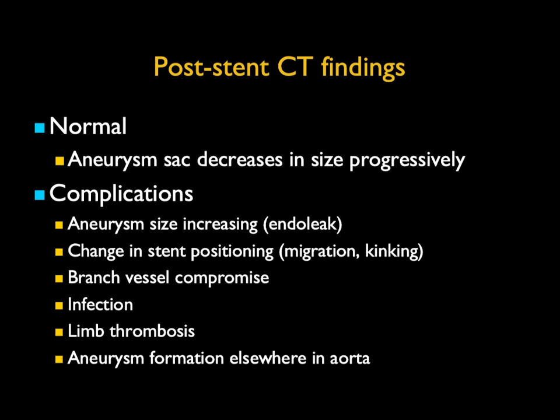If the positioning of the stent changes — migration or kinking — you have a problem. Branch vessel compromise, most commonly the renal artery, is also a concern, as are infections, limb thrombosis, and aneurysm formation elsewhere. If a patient has something like Ehlers-Danlos, you'll see aneurysms from the aorta to the SMA, celiac, and carotids — in many places. Taking care of one aneurysm does not guard against the next. Don't have a satisfaction of search where you find one aneurysm and stop — you've got to keep looking.